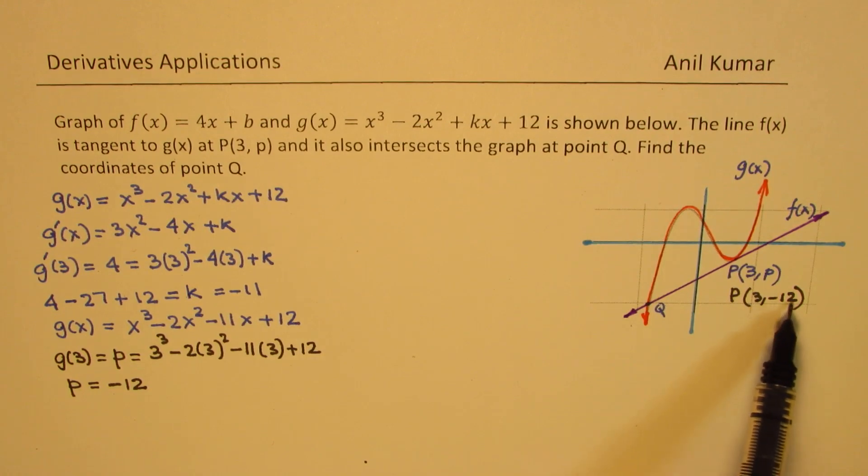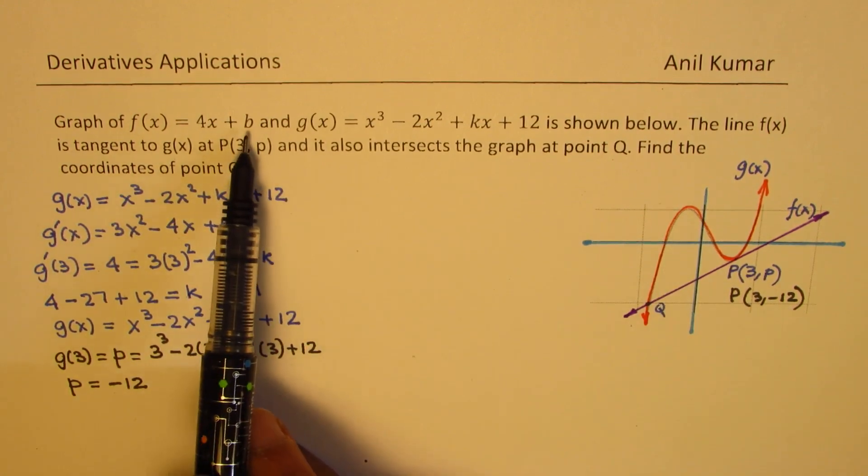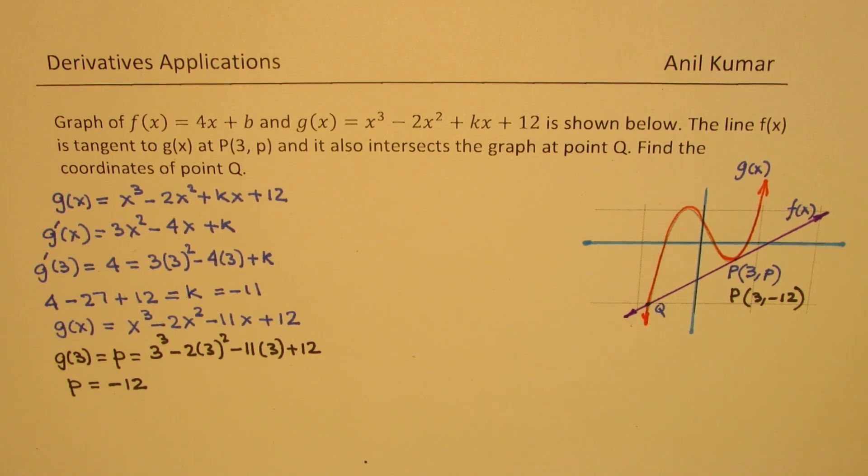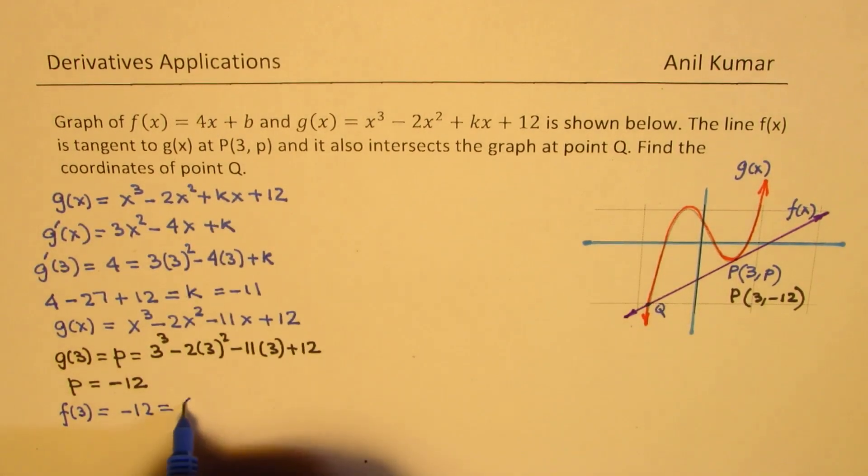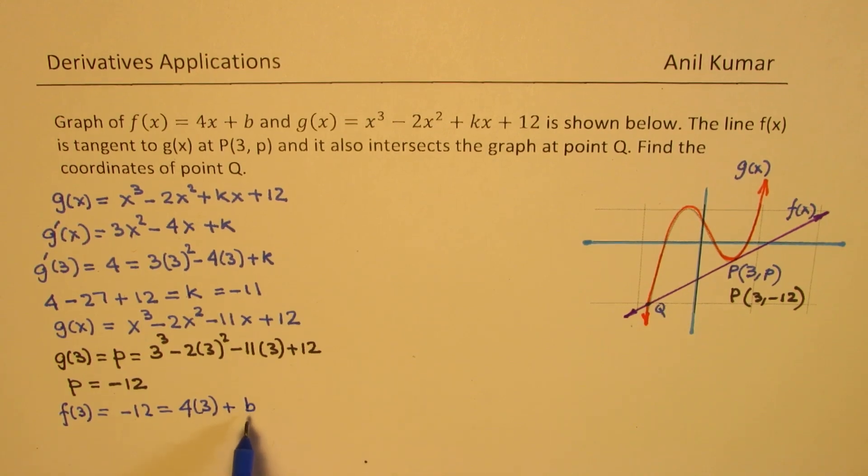This point is common to both the tangent line and the function. So at this value of x = 3, the y value is -12; that should help us to find the value of b. So let's get back to the equation of this tangent line. At x = 3, f(3) should be -12. When I substitute 3 here, I get 4(3) + b. From here we can find what is b. So -12 = 12 + b, which gives us b = -24.